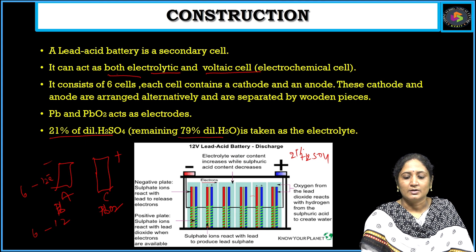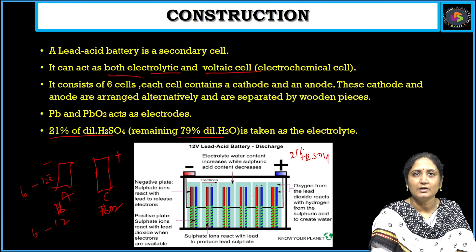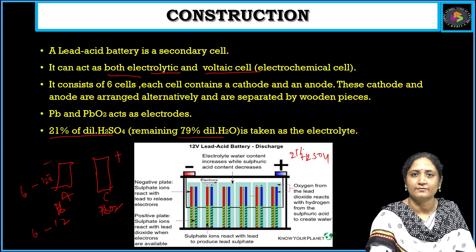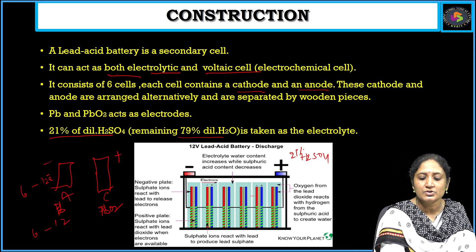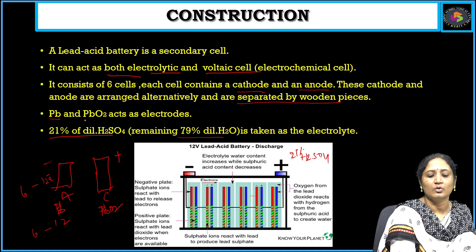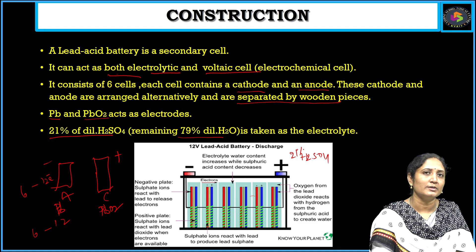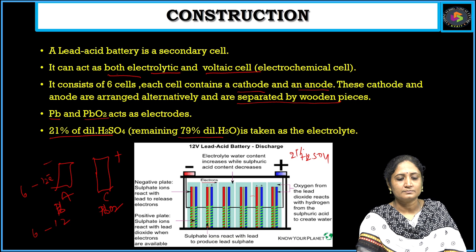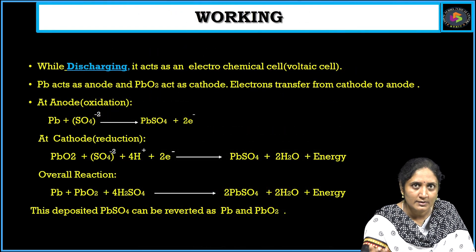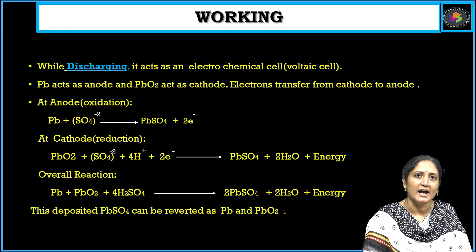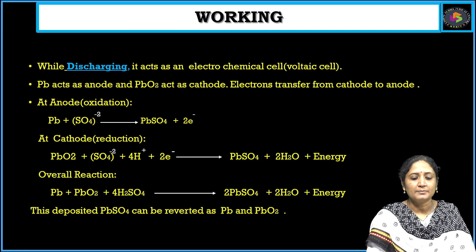So this is the construction of the lead acid battery. It is a secondary cell that acts as both an electrolytic cell and a voltaic cell. It consists of 6 cells, each with a cathode and an anode, which are alternately arranged and separated by wooden pieces. Pb acts as anode, PbO₂ acts as cathode, and the electrolyte is H₂SO₄. According to secondary cells, both discharging and recharging reactions take place.